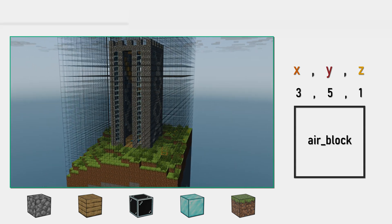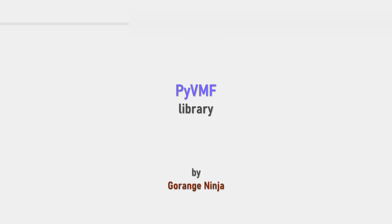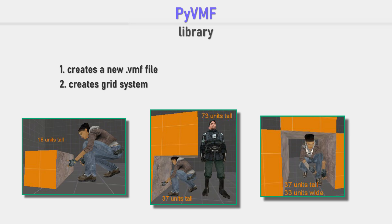That activates a second part of the conversion process, which relies on the PyVMF library written by GoWrenchNinja, a surf mapper himself. That allows us to create and modify Valve Map Files via Python code. The script creates a new map and a coordinate system to translate the coordinates from our list. Source obviously doesn't use a coordinate system where every cube equals a Minecraft block, but rather a standard 3D environment based on Hammer units, which equal inches, with the possibility to be even more precise if needed.